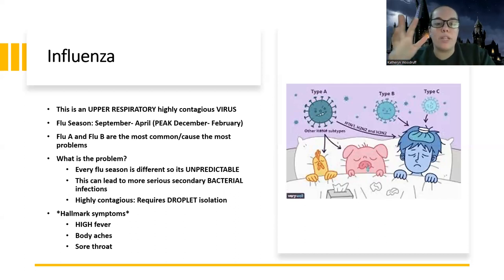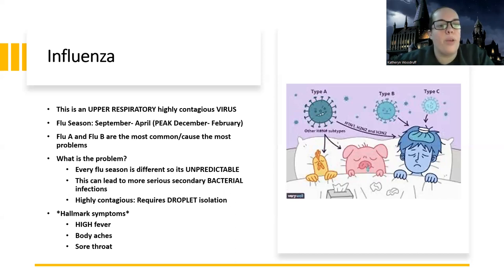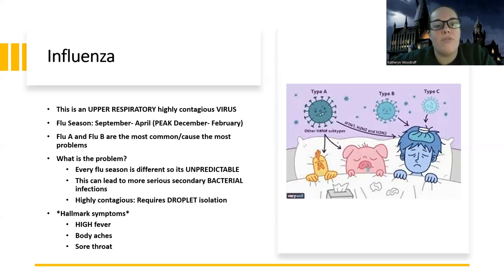Influenza is upper respiratory, so all my symptoms are from here up. Flu season runs from September through April, so right now we are in the peak of it. I am recording this in January, and this flu season has been pretty serious between COVID, the flu, and RSV. It's been a pretty rough one.